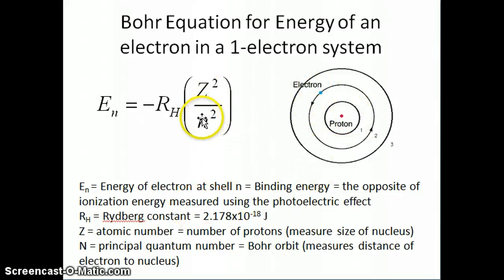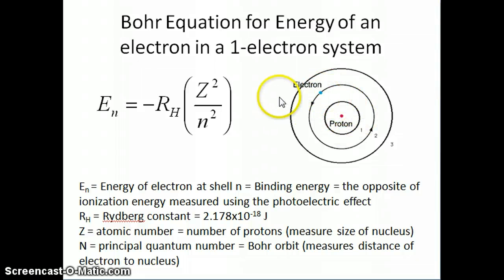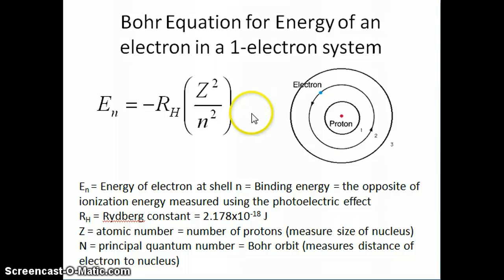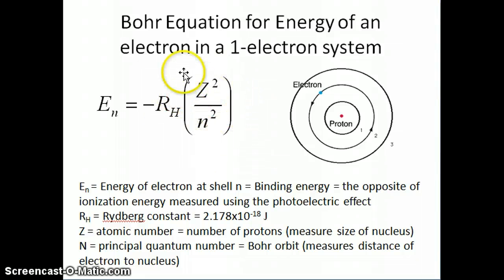The n component here is basically a measure of the distance factor. If you think about it, the larger n is, the further away the electron is, which means the weaker the energy is. Think about how that plays into this equation by substituting some numbers in here.